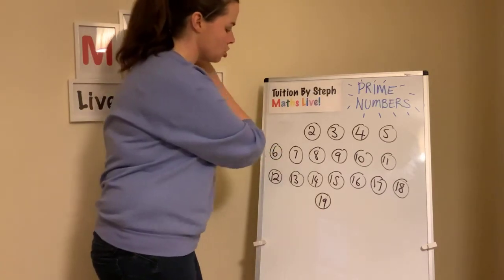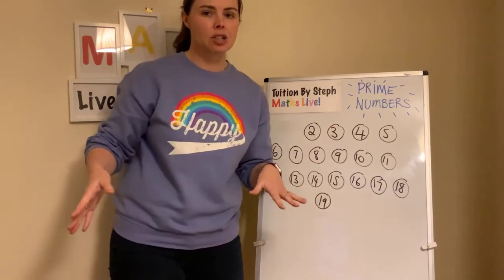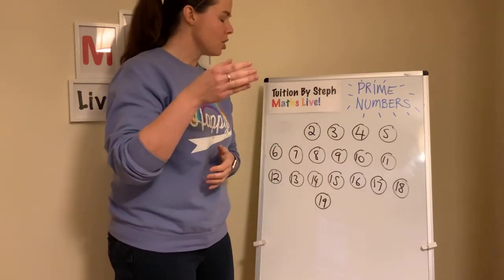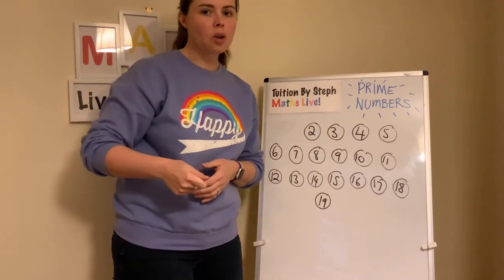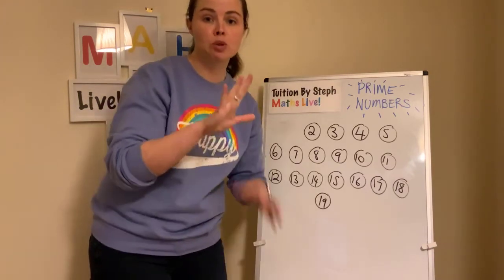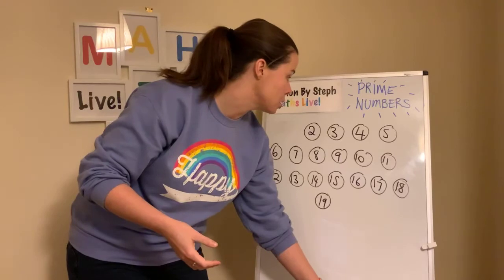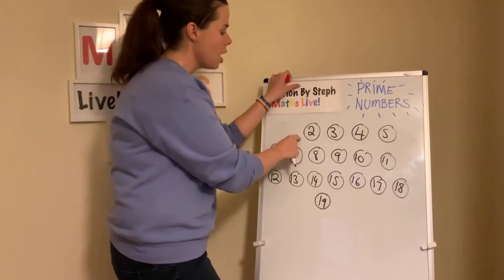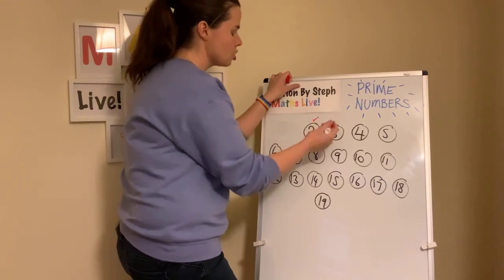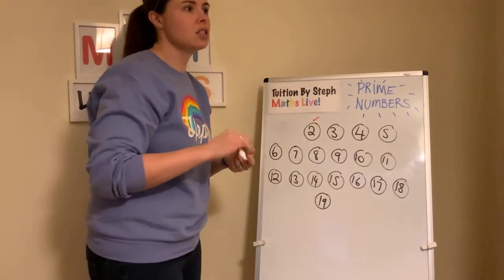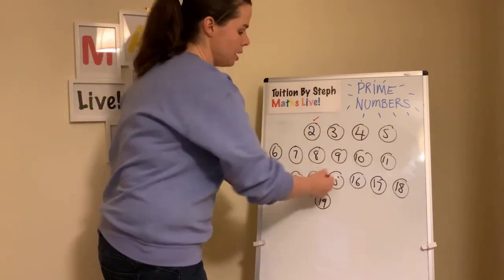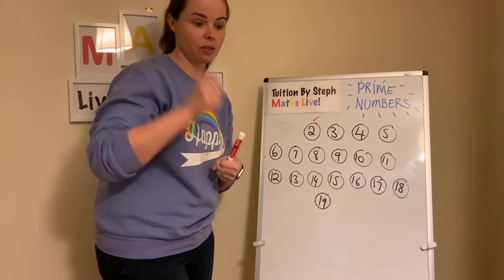I've asked you to write the numbers two to 19. What I'd like you to do is methodically — and methodically means take your time and work through — I'd like you to cross out all the numbers that are not prime, so we should only be left with the prime numbers. Go through and check: we know two is a prime number. Is three in any other times tables apart from its own? Work through and see which numbers you're left with — off you go.